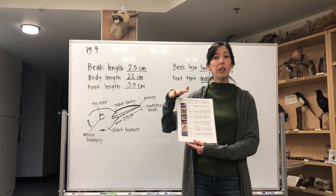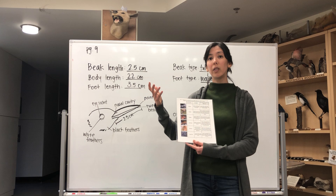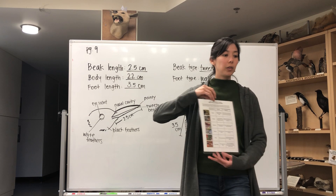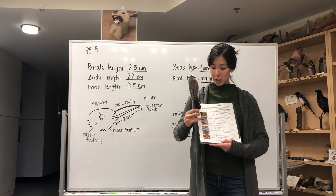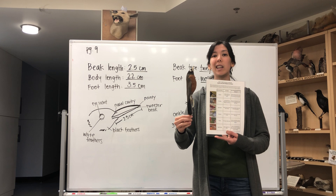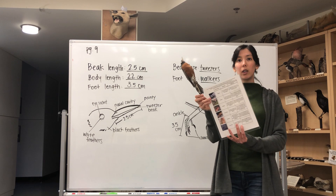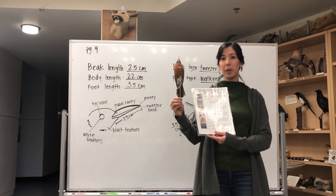As an example, for my American robin specimen: going through the beak pictures and descriptions, I determined my bird has a tweezer beak and wrote that in. Then looking at the foot side, I determined the robin most likely has walker feet — the first type on the list — and wrote that as well.